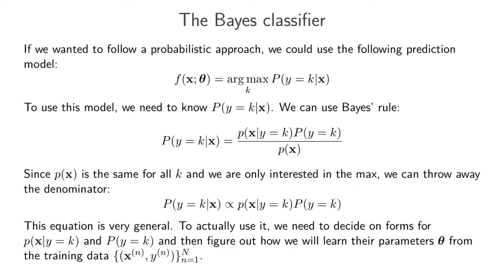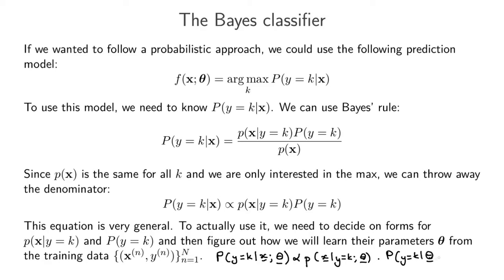We can write this equation more concretely: the probability of y equal to k given x and all my parameters is directly proportional to p(x | y=k, θ) times p(y=k | θ). This makes it explicit that we need to decide on the forms for the class-conditional density and the prior, and then figure out how to learn the parameters from the training set. A classifier that explicitly models both of these terms is called a Bayes classifier.